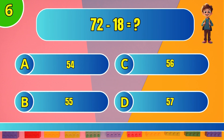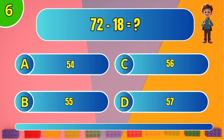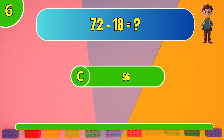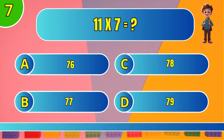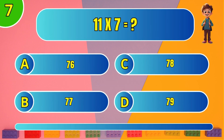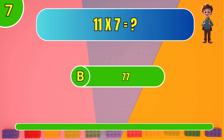What is 70 minus 18? C: 56. What is 11 times 7? B: 77.